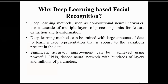In deep learning convolutional neural network methods, a cascade of multiple layers of processing units is used for feature extraction. This requires GPUs or faster hardware in order to process the hundreds of layers and millions of parameters involved.